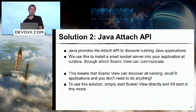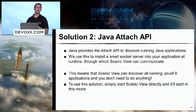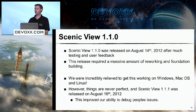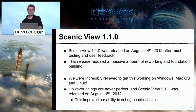The nice thing about the Attach API approach is that you don't have to do anything to your application at all — you don't need to change run profiles or add code. You just start Scenic View up and it discovers your applications at runtime. This was encapsulated in the Scenic View 1.1.0 release, which came out August 14th, just a few months back. This release required a lot of reworking of our code to support the remote connection. It took a lot of effort to get it working on Windows, Mac and Linux, but we're mostly there now. We occasionally get bug reports and we're always keen to hear from people having problems, because it's the only way we can make it better.